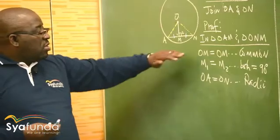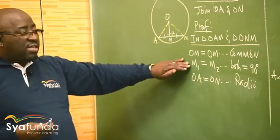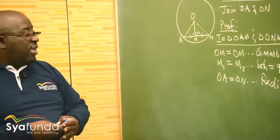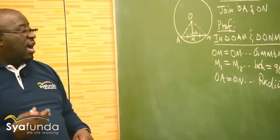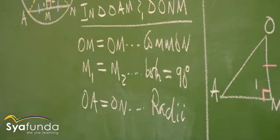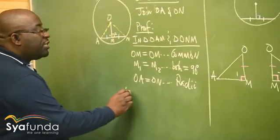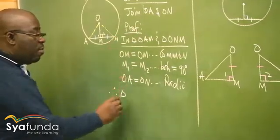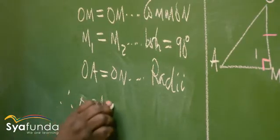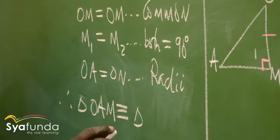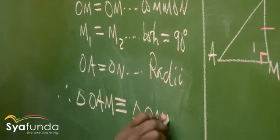Now watch here. What is this called? It's a side. What is this called? 90 degrees. What is this called? It is the hypotenuse. So which case of congruency will work here? It is the fourth one - 90 degrees, hypotenuse, and a side. In this particular case, it is 90 degrees, hypotenuse, and a common side. Hence we can conclude by saying: therefore triangle OAM is equal in all respects to triangle ONM.